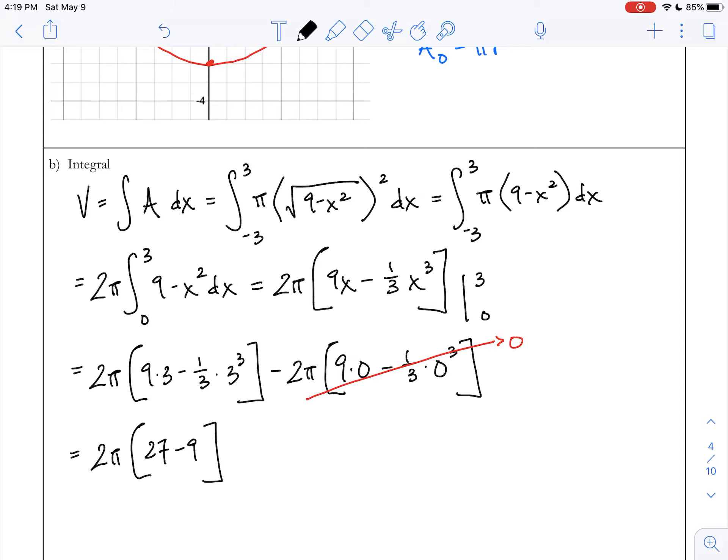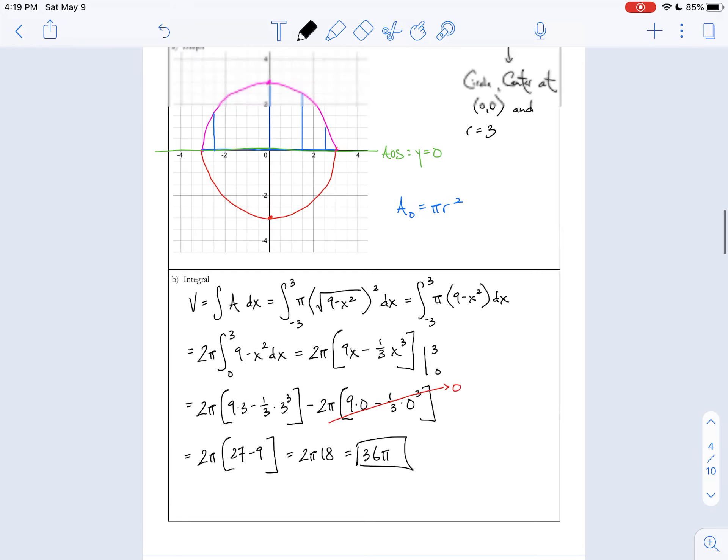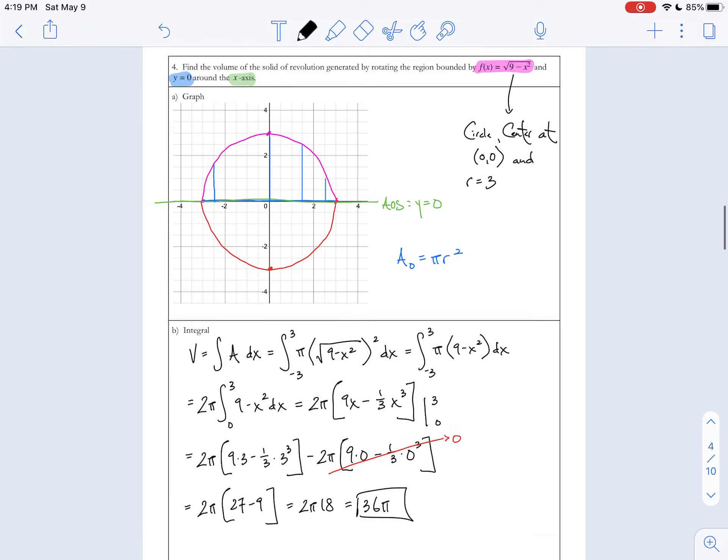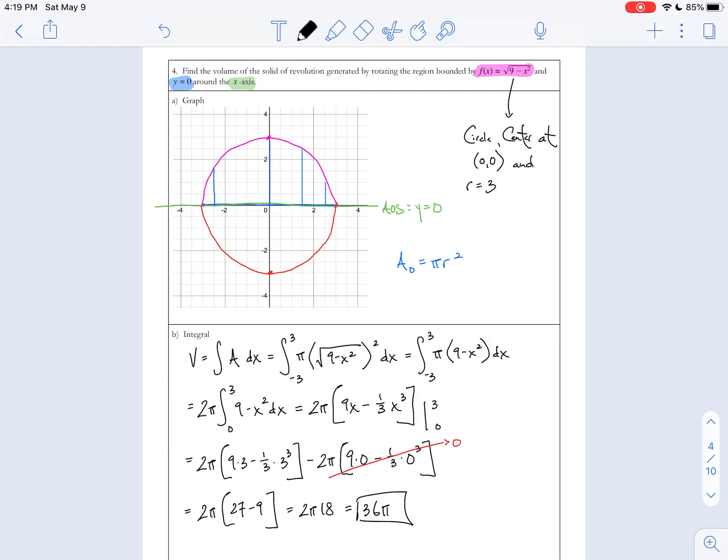All right, so I get 2π times (27 - 9), or 2π times 18, or I get 36π as the volume of this shape when I revolve it.